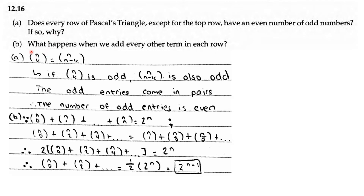n choose k is equal to n choose n minus k, where n is the row number and k is the term in that row. Because they match up, they come in pairs. So if n choose k is odd, then n choose n minus k is also odd. The odd entries come in pairs, so the number of odd entries is even.